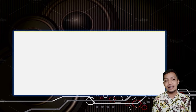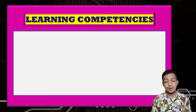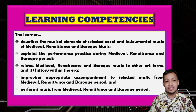So what are we waiting for? Let's get this discussion started. Our lesson for today is all about the music of the medieval, renaissance, and baroque periods. And to start with, let us first consider the following learning competencies or objectives of the lesson. The learner describes the musical elements of selected instrumental music of medieval, renaissance, and baroque music.